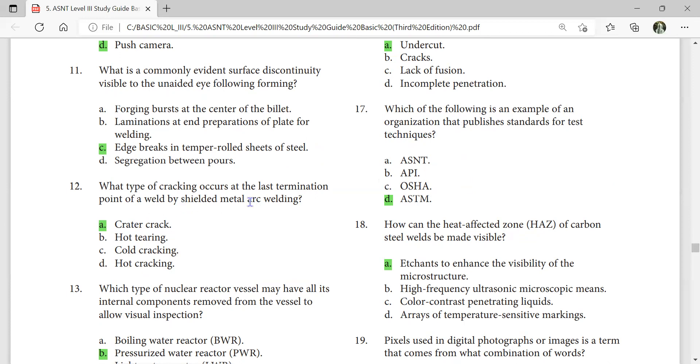What type of cracking occurs at the last termination point of the weld by shielded metal arc welding? Crater crack. These are mainly what you can get in TIG welds, other than SMAW, but okay, sometimes.